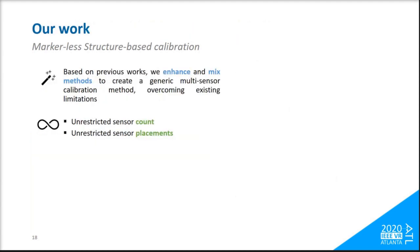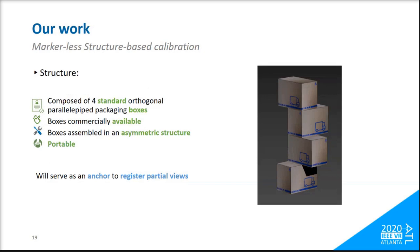In this work we overcome this limitation and develop a volumetric sensor alignment method that is simple to use, portable, and cost efficient. Similar to previous works we use a low-cost asymmetric structure assembled with 4 standard packaging boxes which are commercially available. We use only its physical geometric representation as our volumetric marker, that will be used to anchor all sensor viewpoints onto it.